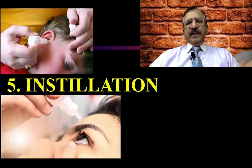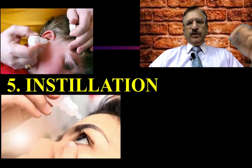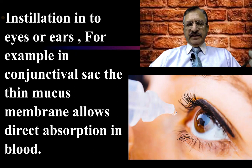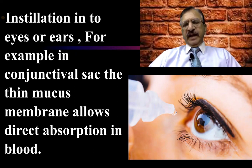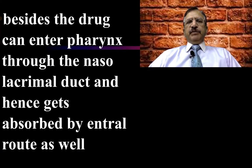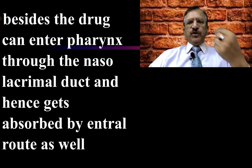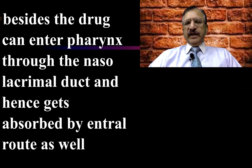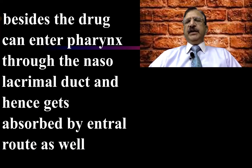Then installation: installation into the ears and installation into the eyes. For example, in the conjunctival sac, the thin mucous membrane allows direct absorption into the blood. Besides, the drug can also enter into the pharynx through the nasolacrimal duct, and then it gets absorbed through the enteral route.